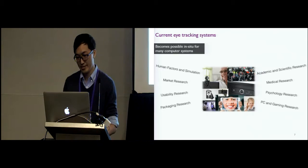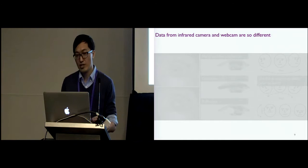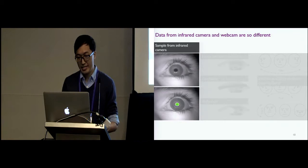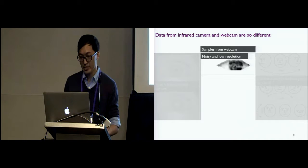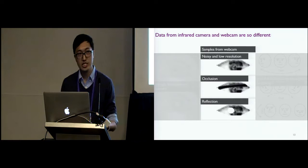But what are our key challenges? The biggest challenge here is the data. The data from the specialized device is extremely different from that of the webcam. This is a sample image captured by an infrared camera. The important eye features here are so clear that it's much easier to do accurate eye gaze tracking and gaze estimation. In contrast, the sample from webcam is of much lower quality and is much noisier.